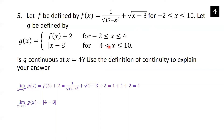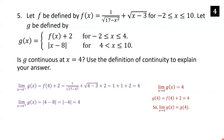For the right-hand limit, we use the second piece: |4−8| = |−4| = 4. Both one-sided limits equal 4, so the limit exists and equals 4. Also, g(4) is defined using the first piece — f(4)+2 = 4. Since the limit as x→4 of g(x) equals g(4) = 4, g is continuous at x=4.